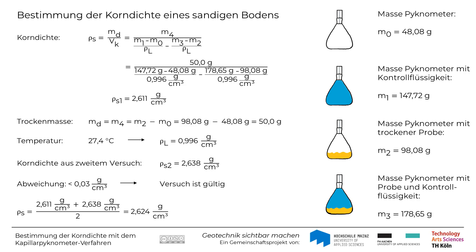Damit liegt der bestimmte Wert etwas unterhalb des Erfahrungswertes für Sand. Sie haben in diesem Lehrvideo gesehen, wie die Korndichte einer trockenen Bodenprobe mithilfe eines Kapillarphygnometers bestimmt wird. Zur Verwendung einer feuchten Bodenprobe wird auf die Norm verwiesen. Die Korndichte wird bei vielen weiteren Laborversuchen als Hilfsgröße benötigt und stellt damit eine sehr wichtige Basisgröße dar.